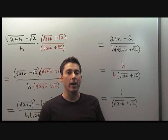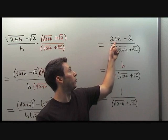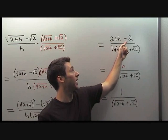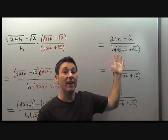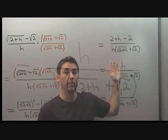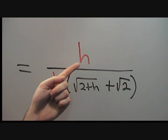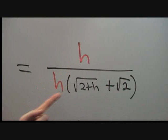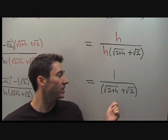After we square each of the square roots in the numerator, we are left with two plus h minus two on top, and the bottom we leave as it is. We are left with a very nice expression. We have h on top and h on the bottom, and now we can cancel those. After canceling the h, we are left with a very clean simplified expression.